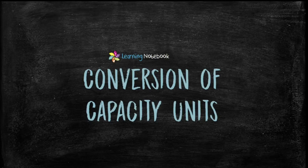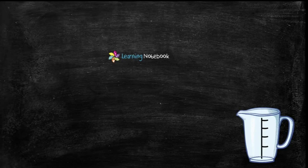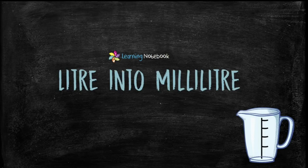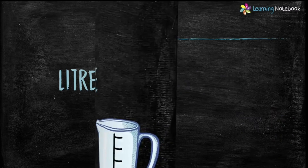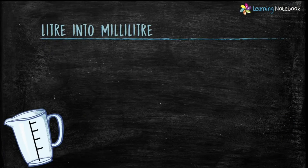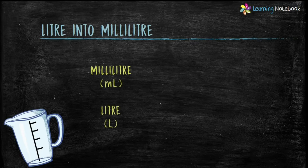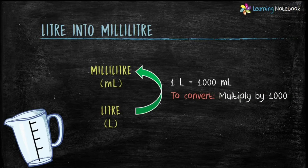Now let's see the conversion of capacity units. First, let's see how to convert liter into milliliter. One liter equals one thousand milliliters, so to convert liters into milliliters, multiply by one thousand.